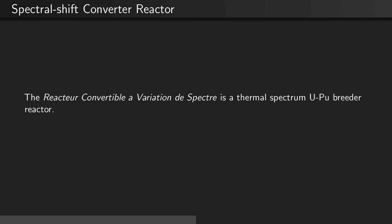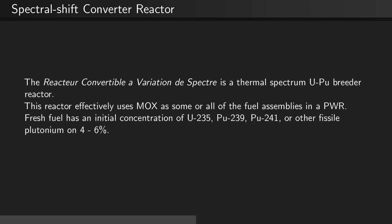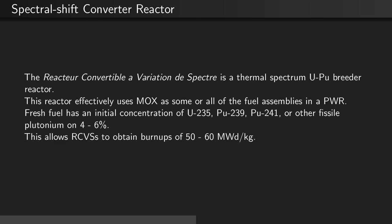The RCVS is a thermal spectrum uranium-plutonium breeder reactor. This reactor effectively uses MOX, or mixed oxide fuel, as some or all of the fuel assemblies in a PWR. Fresh fuel has an initial concentration of uranium-235, plutonium-239, plutonium-241, or other fissile plutonium isotopes on the order of 4 to 6%. This allows RCVS's to obtain burn-ups of 50 to 60 MW days per kilogram.